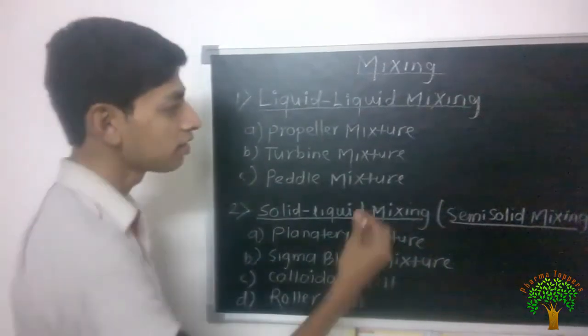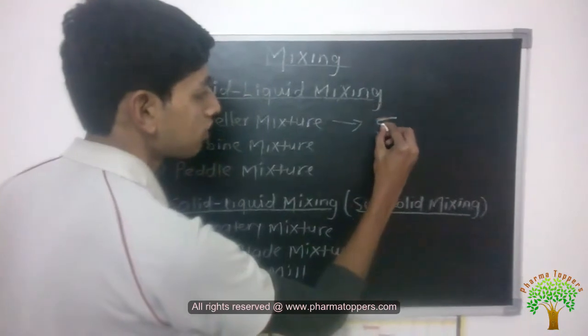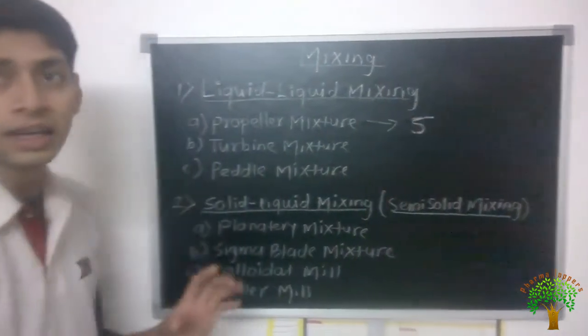Second one is turbine mixture. The limit is that if viscosity is up to 5 then it is useful.